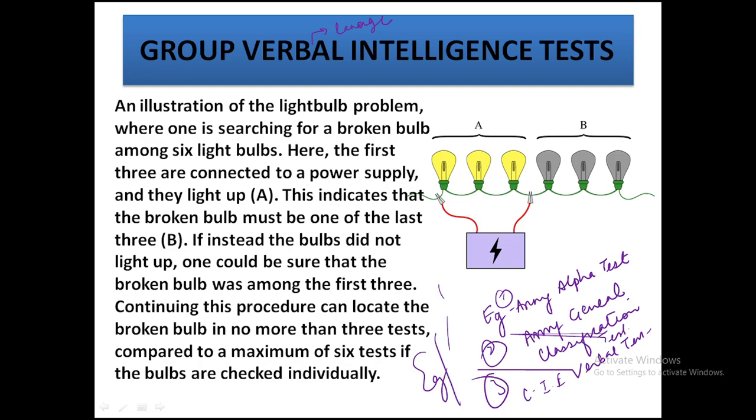For example, in a verbal intelligence test, you are given six bulbs and told that one bulb is defective. You have to find out which one is defective. Since three of the bulbs are glowing, it means one of the remaining three bulbs is defective. You have to check and identify which bulb is defective. This is how a verbal intelligence test is conducted.